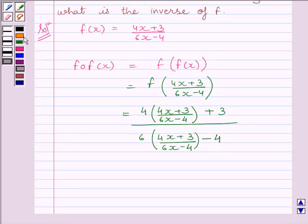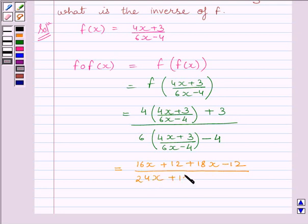On simplifying, we get (16x + 12 + 18x - 12)/(24x + 18 - 24x + 16). Plus 12 and minus 12 get cancelled, plus 24x and minus 24x get cancelled, and we get 34x/34.